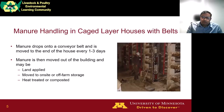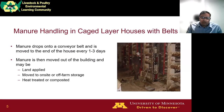In cage-layer houses with manure belts, the manure drops onto a conveyor belt and is moved to the end of the house every one to three days. Manure is then moved out of the building and may be directly land applied or moved to on-site or off-farm storage. In some cases, manure may also be heat treated or composted, though we don't focus on heat treated or composted manure in this analysis.